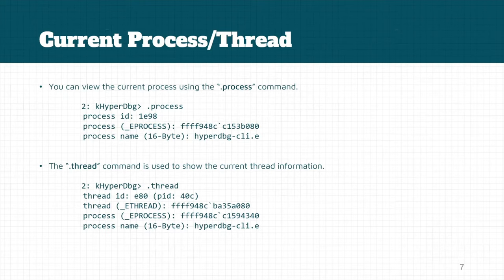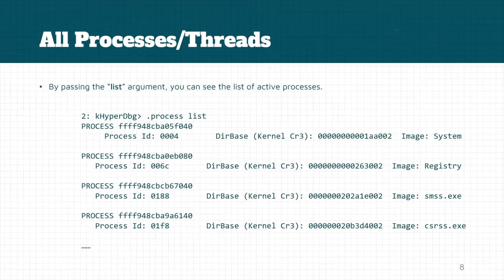The process layout is valid in our current debugging context. There's also another command called .thread — this command is used to show the current thread information, the current thread that is running on the system. It also shows the EPROCESS structure for the current process and the ETHREAD structure for the current thread. If you want to see the list of processes you can use .process list, but using this command requires your symbol files to be configured.